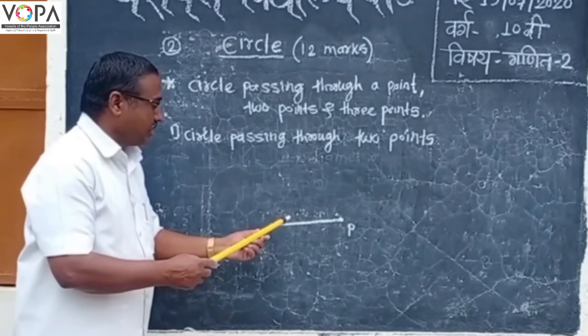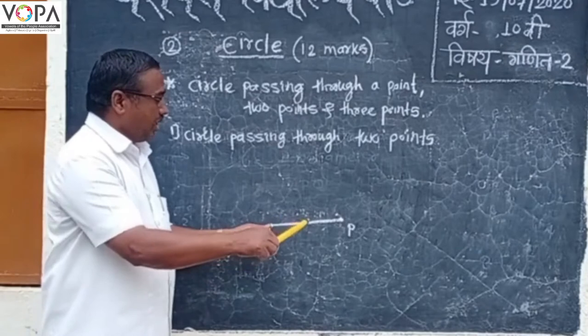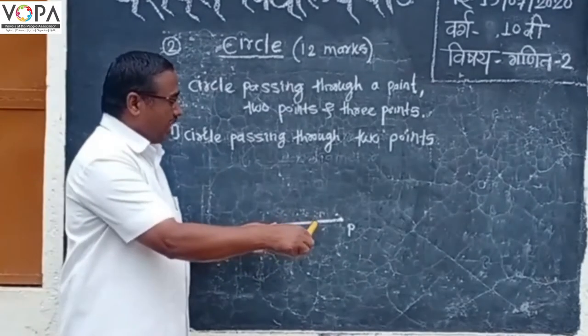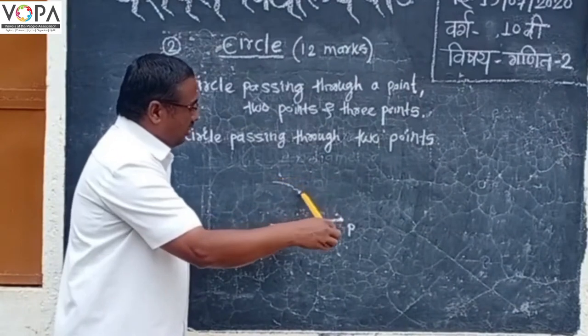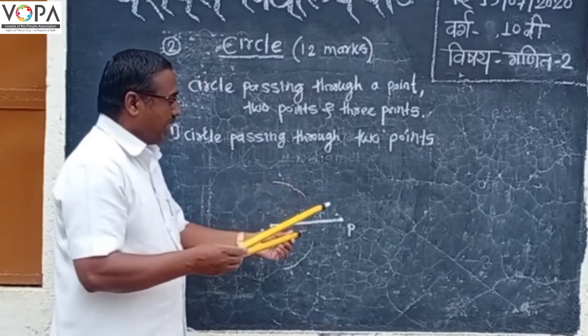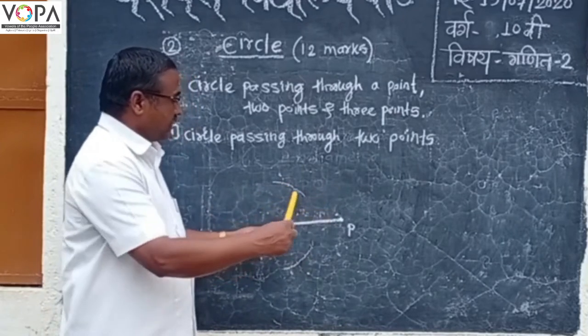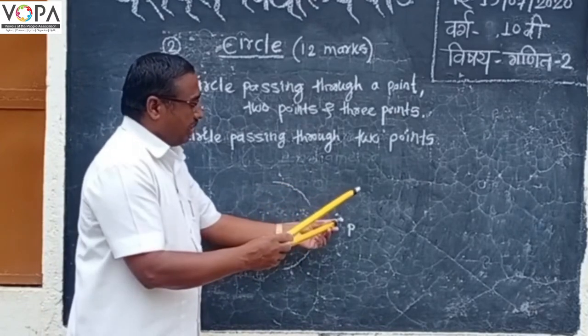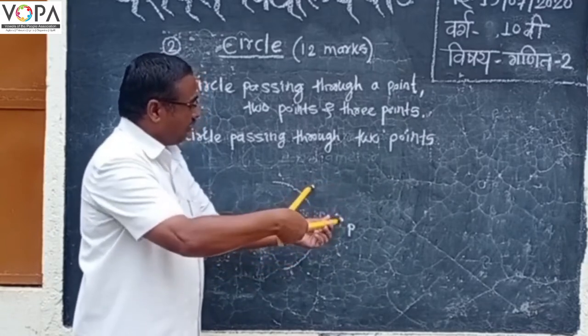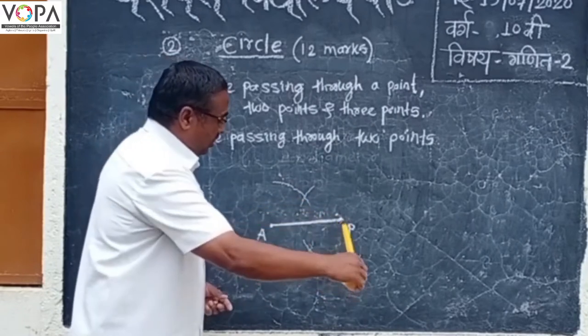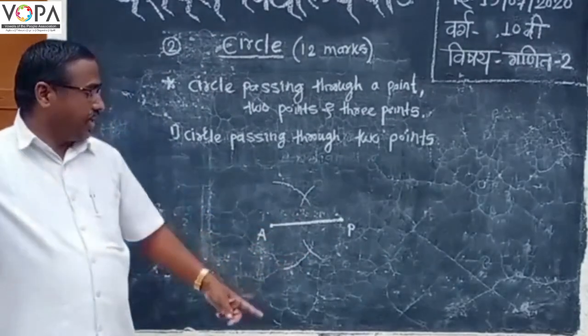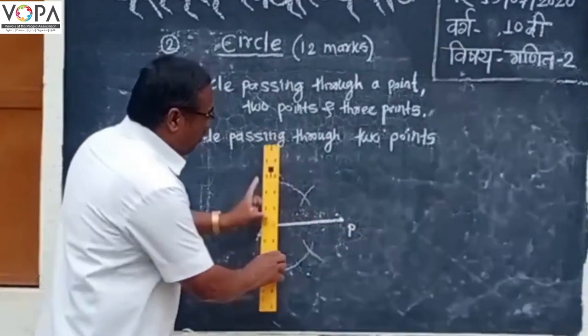Put your compass on point A. Take distance more than half in your compass and draw arcs on both sides of segment A-P. With the same distance, draw arcs from point P. Then we get intersection of arcs. Join these intersection points.